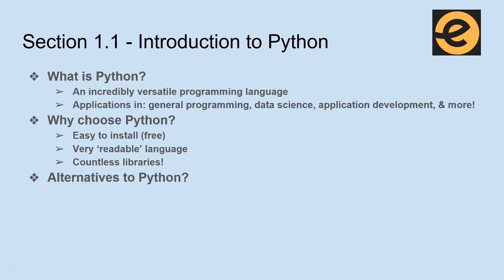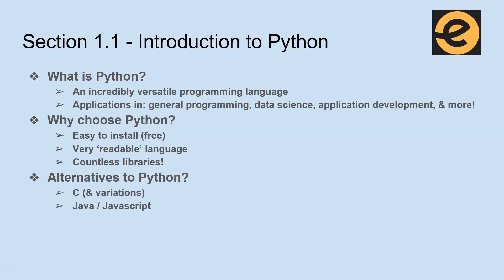There are some alternatives to Python. Think of C in all its variations. You have Java, JavaScript, Ruby, and Perl. They are out there. However, hopefully by the end of this course, you'll see that Python has some significant advantages over the competition.